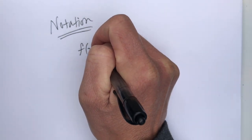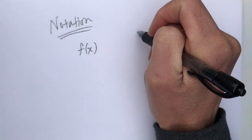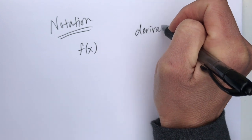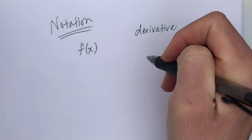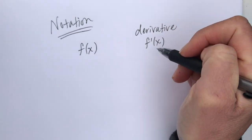What we've seen before is we have a function f of x, and when we want to take the derivative, we note that as f prime of x.